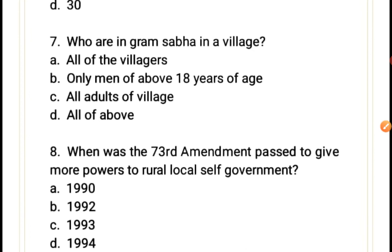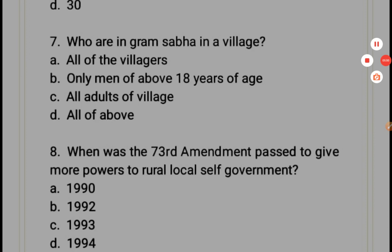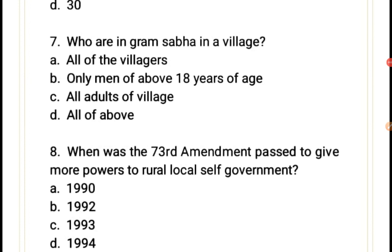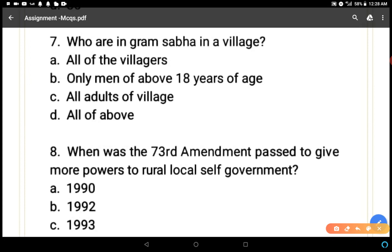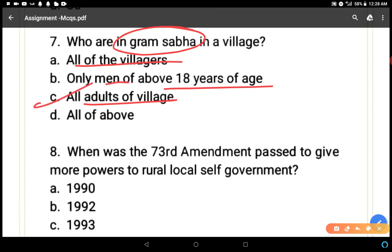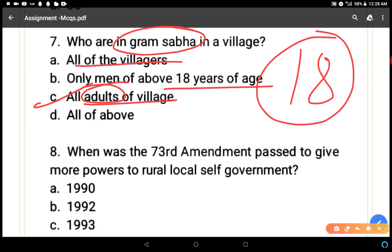Next question: who constitutes a gram sabha in a village? Gram sabha exists in every village and its members elect the gram panchayat — controlling and electing gram panchayat members is the major function of gram sabha. The correct answer is: all adults of the village. Adults means those who are 18 years or above, so all people aged 18 or more are members of gram sabha.